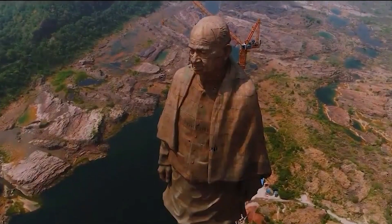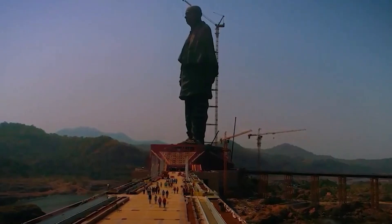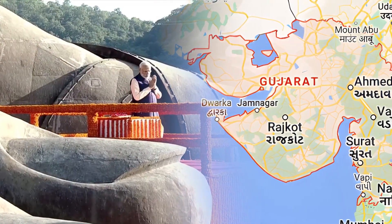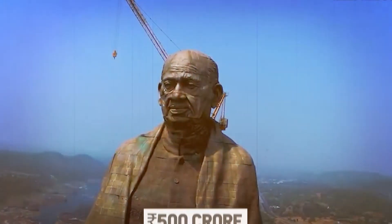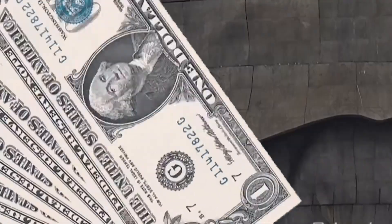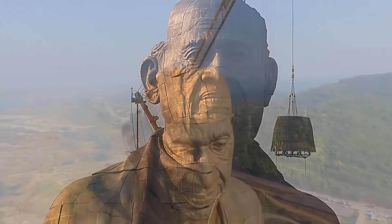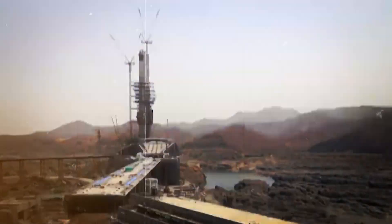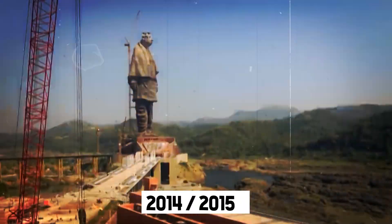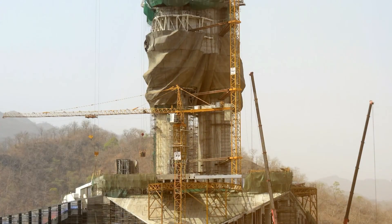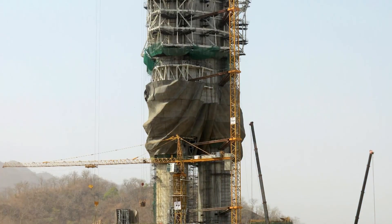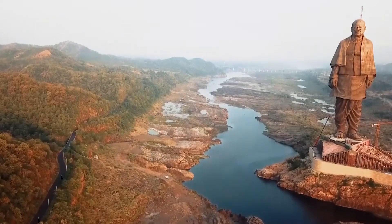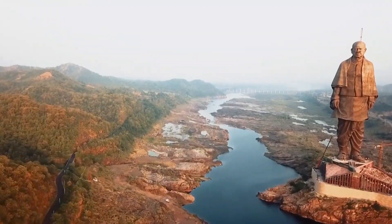The Statue of Unity was brought to life through a public-private partnership model, with substantial funding from the government of Gujarat. The state government allocated Rs. 500 crore — approximately $94 million — for the project from 2012 to 2015. Additional funds were also provided in the 2014–15 union budget, cementing the government's commitment. Public sector undertakings also contributed under the Corporate Social Responsibility Scheme.